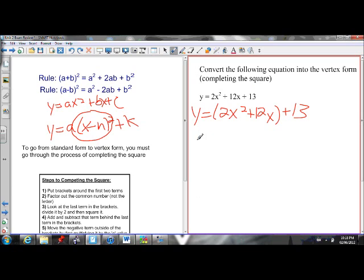So in order to do that, I group the first two terms, and then I don't want a number in front of the x squared here, so I'm going to factor it out from the numbers in the bracket. So I now have x squared plus 6x in the brackets because I divided it both by 2. That 13 is just off by itself out there.